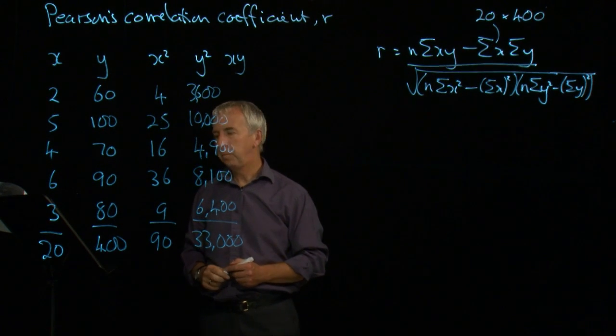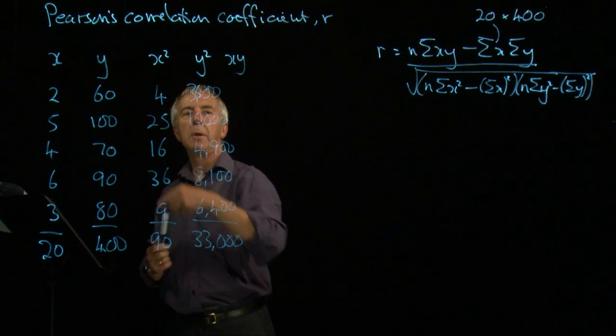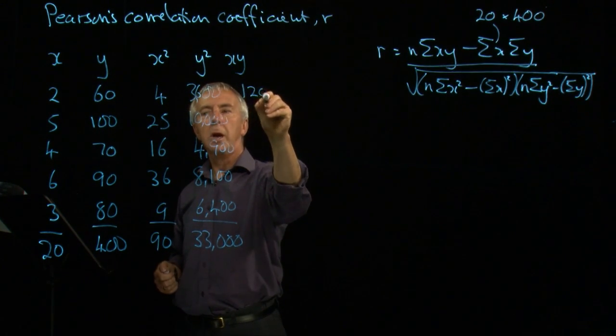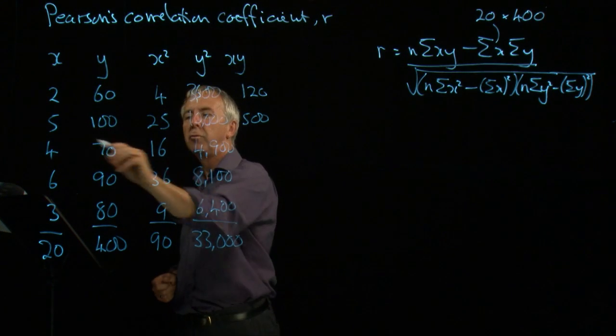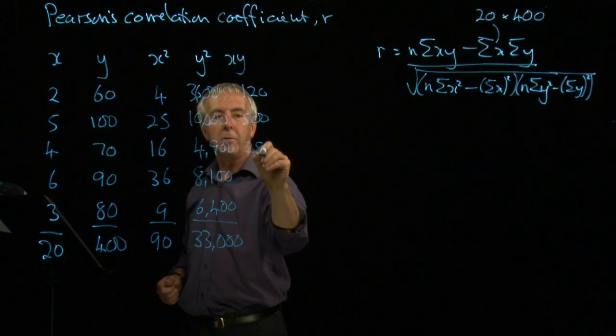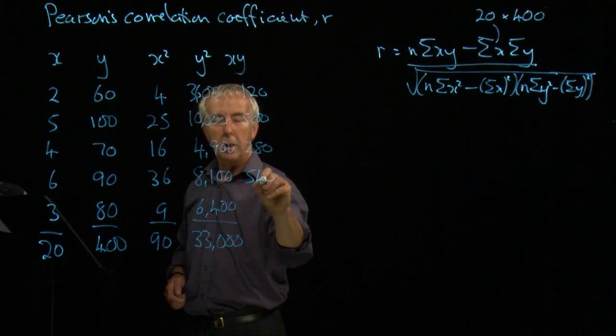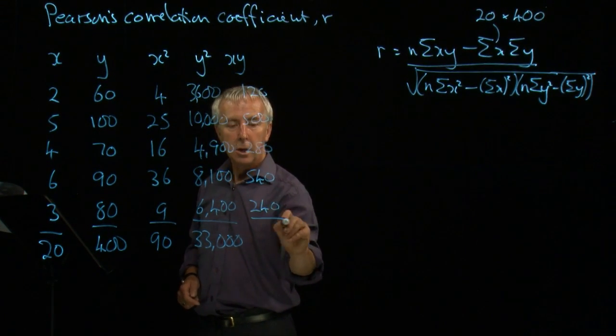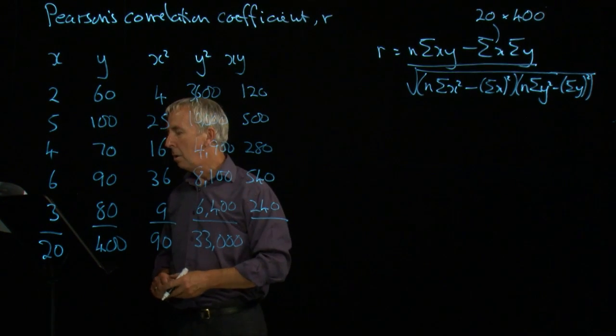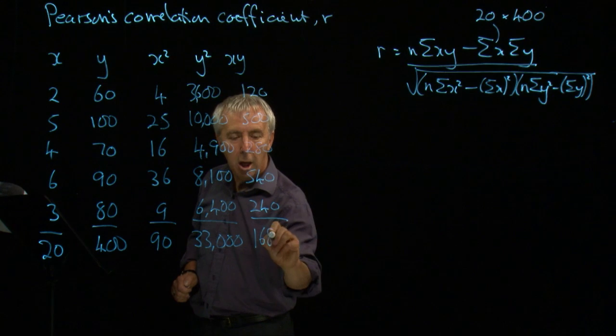And then we need to do x times y, 2 times 60 is 120, 5 times 100 is 500, 4 times 70 is 280, 6 times 90 is 540, 3 times 80 is 240, and the total of all of those is 1680.